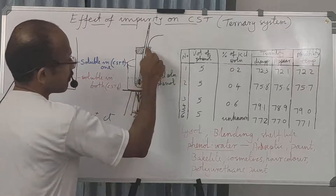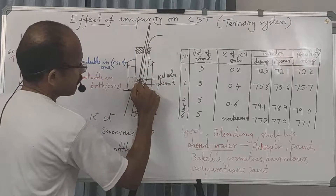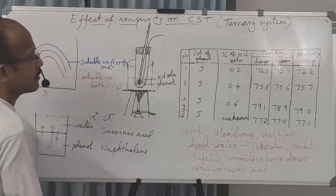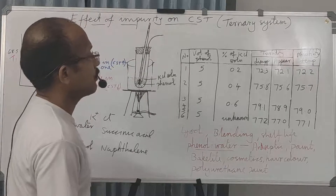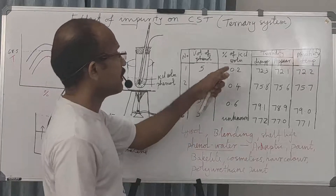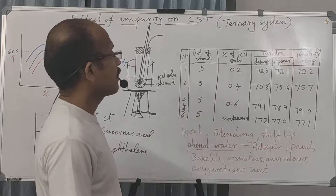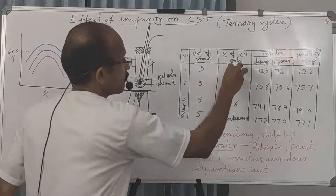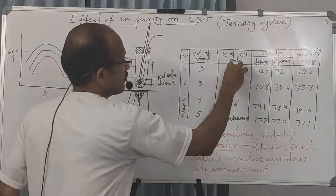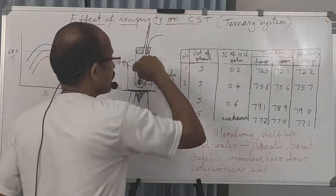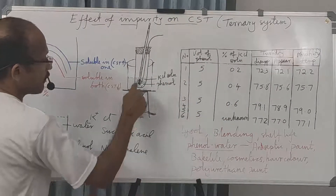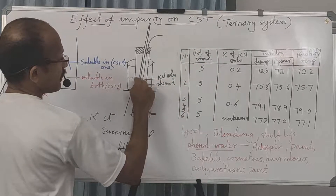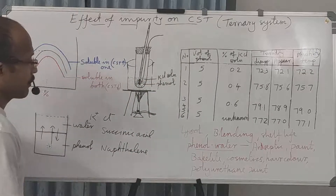First, we introduce 5 ml of phenol to the boiling tube. Then, from the given 1% KCl solution, we prepare different KCl solutions of known concentrations. From one concentration of KCl, we take 5 ml and transfer it to the tube — so we have 5 ml phenol plus 5 ml of, say, 0.2% KCl solution — giving a total of 10 ml.